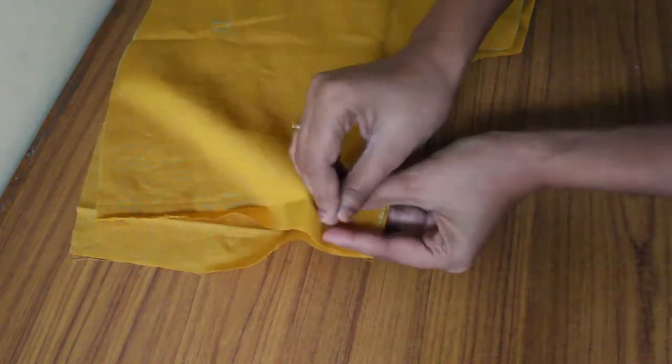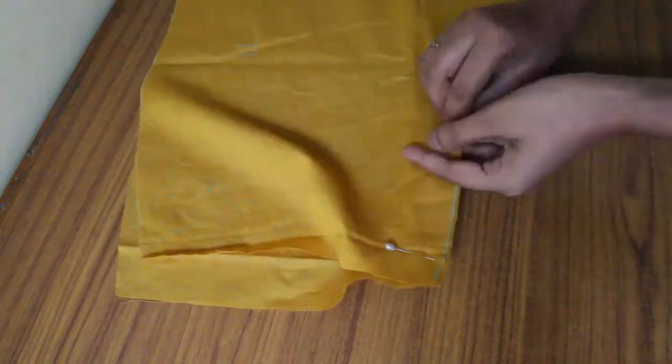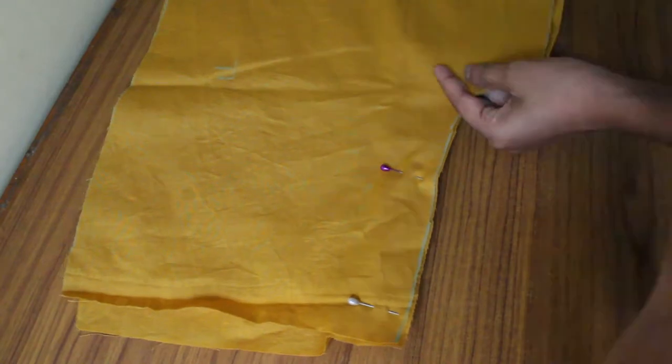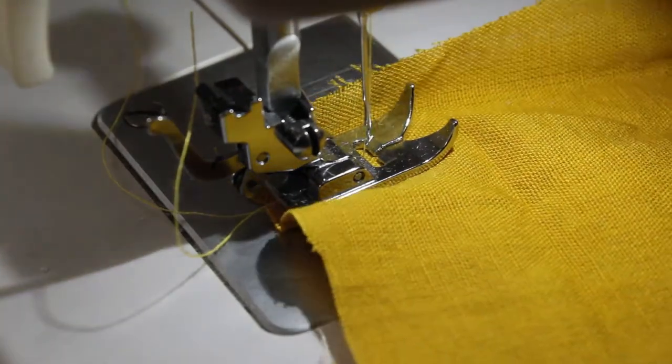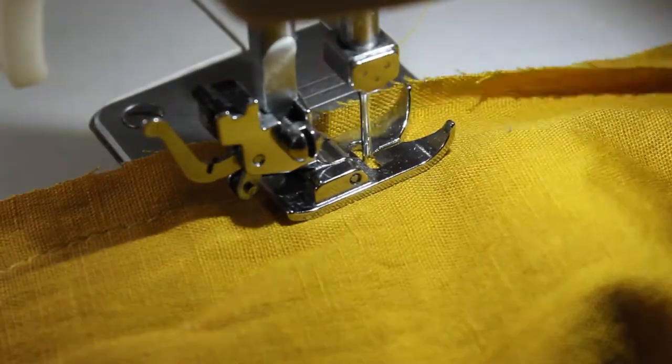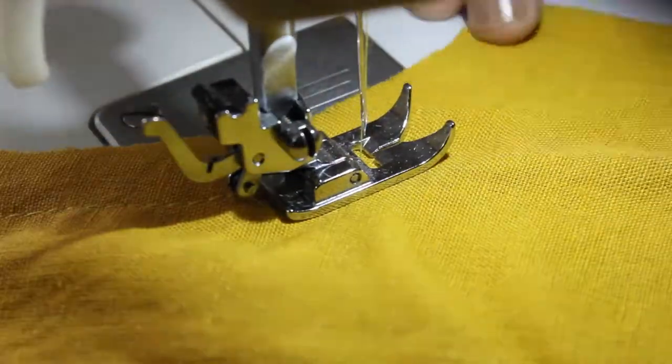I started by joining the pieces together as shown in the video at half an inch. Then I placed the two separate pieces on one another facing right side and stitch the inner seam at the long edge.